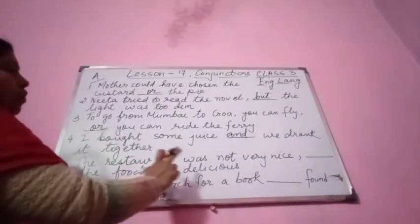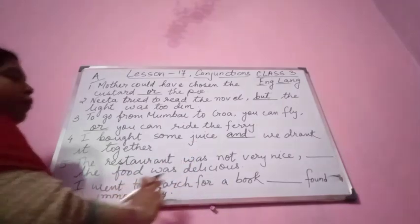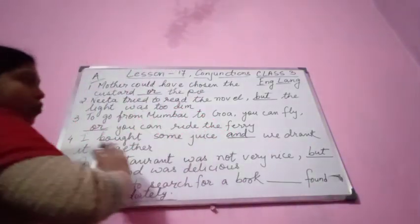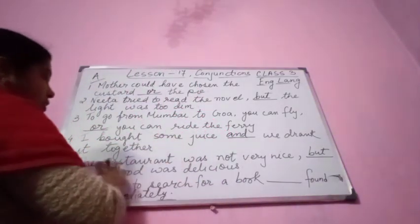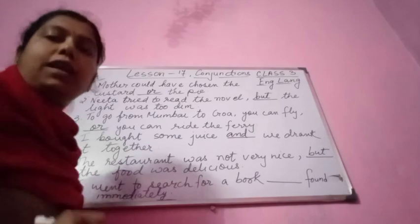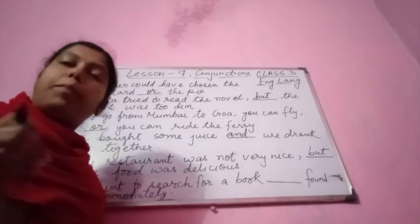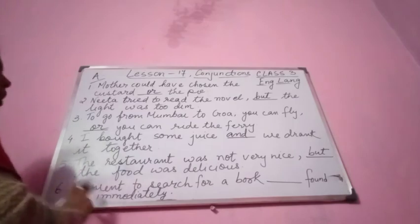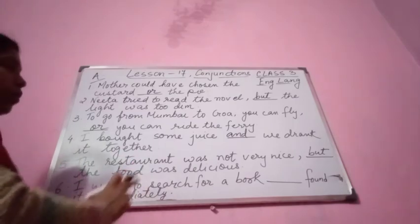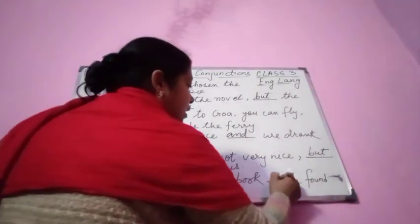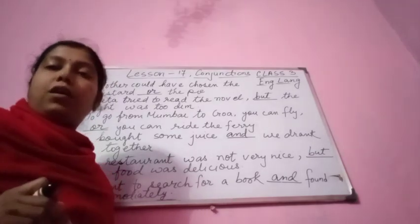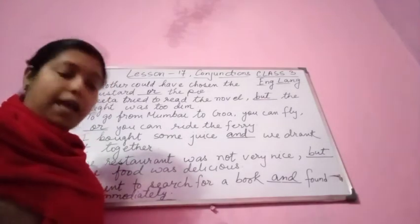Number five: The restaurant was not very nice — but — the food was delicious. Two opposite things are in contrast: the restaurant was not good, but the food was tasty, so we use 'but.' Number six: I went to search for a book — and — found it immediately. Two similar things are joined using 'and.'